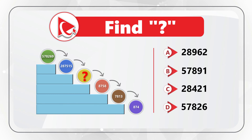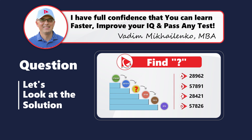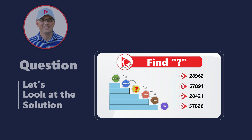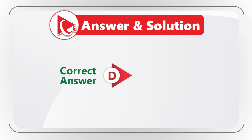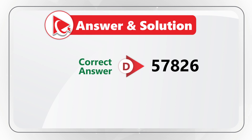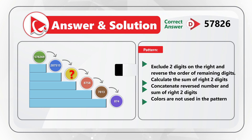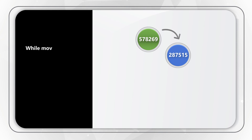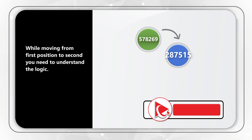Take a close look to see if you can complete the calculations. I am moving forward to share my version of the solution — if you have a better way to solve it, please post in comments. I believe the correct answer here is choice D, 57826. To understand why, let's look at the pattern. As the ball rolls from the first position to the second, transforming from digits 578269 to digits 287515, we need to understand the logic.